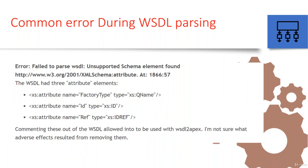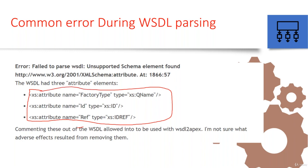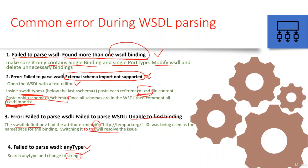The same way, there may be other kinds of errors. Sometimes you get the error 'unsupported schema attribute element found at some line.' If you see in that schema or WSDL, there will be three schema attributes defined. If you have any attributes defined as 'xs:id,' 'xs:idref,' and 'xs:qname,' what you can do is simply go and comment out those three attributes. By commenting these out of your WSDL, you can then use it for WSDL to Apex conversion.